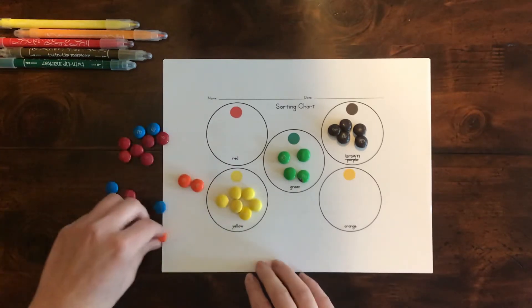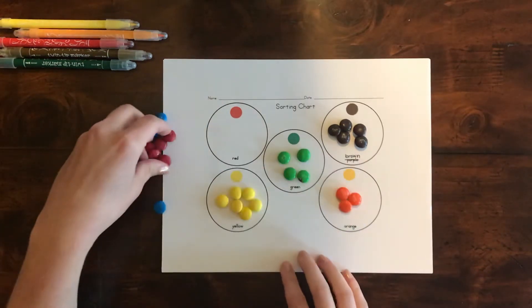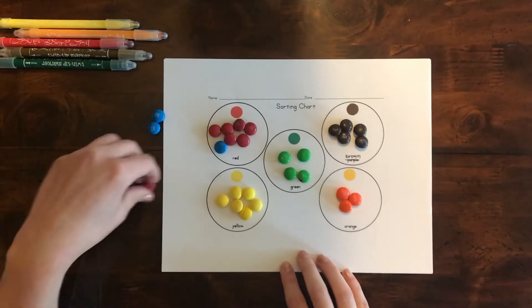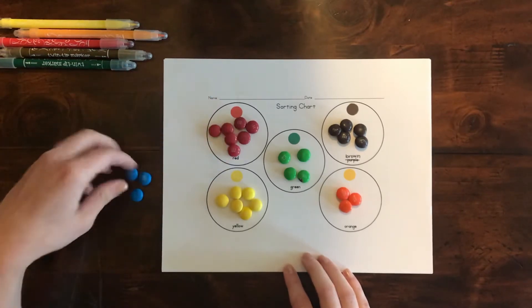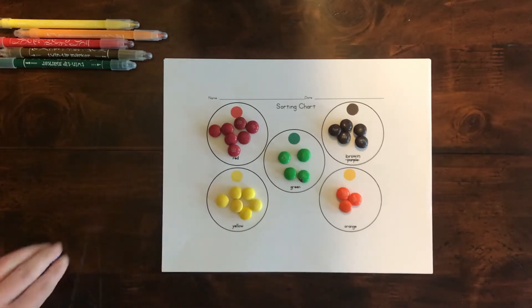Then the orange, then the red, and oh no, I have a problem. I have some left over. So what you get to do if you're using M&Ms and you have blue ones, you get to eat those ones.